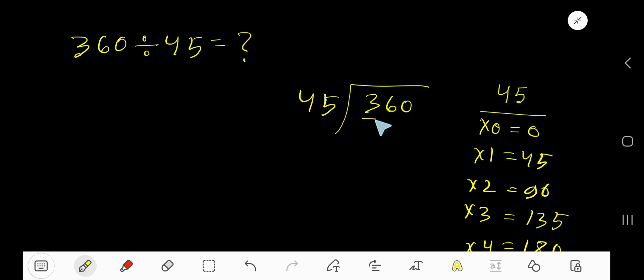Now 45 goes into our dividend. 3 is less than 45, so 0 times 45 equals 0. Subtract, you're getting 3. Bring down the next digit. Now we have 36. 45 goes into 36 again zero times as 36 is less than 45. 0 times 45 equals 0. Subtract, you're getting 36. Bring down the 0. Now 45 goes into 360.